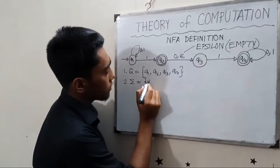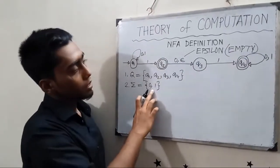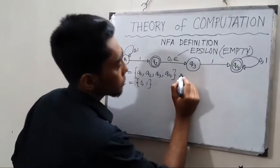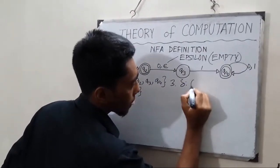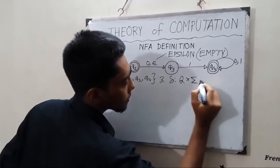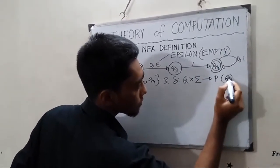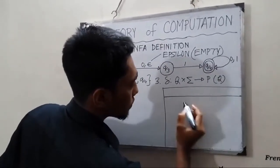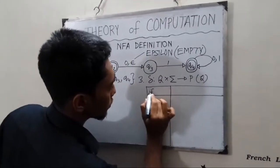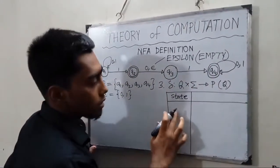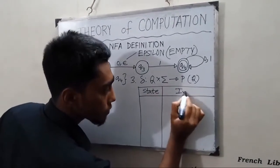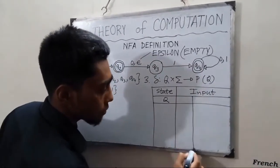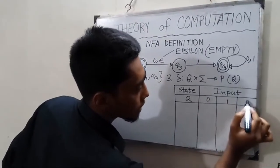The alphabet is the input set. The input set is 0 or 1. Delta maps Q into sigma, implying the power set of Q. The transition table has a first column for state and a second column for input — with inputs 0, 1, and epsilon.